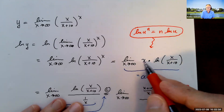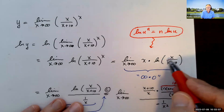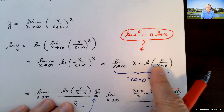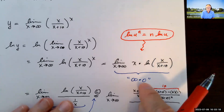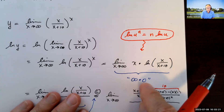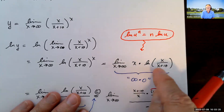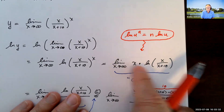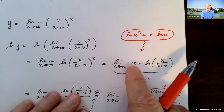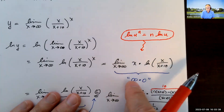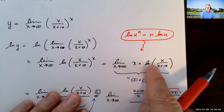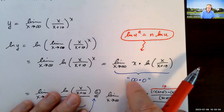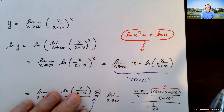As x goes to infinity, x clearly goes to infinity. The quantity x/(x+10) goes to 1, so ln(x/(x+10)) approaches ln(1) = 0. So we have an infinity times 0 form. You can't just say anything times 0 is 0 — this is a limit, so we're never actually equal to 0. The x is trying to push the product to infinity while the log term is trying to push it to 0. The limit could be infinity, 0, or something in between.